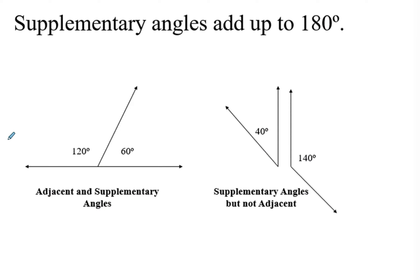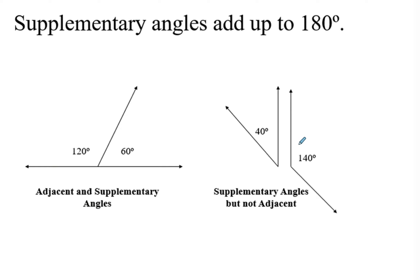Supplementary angles add up to 180. Sometimes you have ones that are both adjacent and supplementary — they add to 180 and are next to each other. Sometimes you have ones that are supplementary but not adjacent, so they're not touching and don't have a shared side, but they are still supplementary.